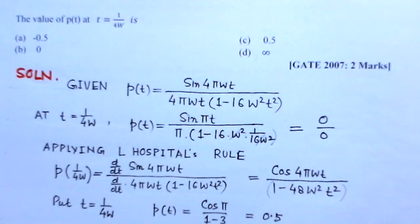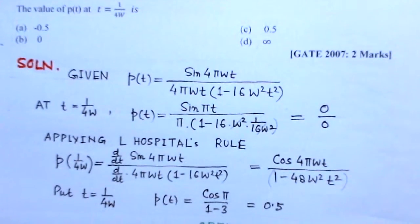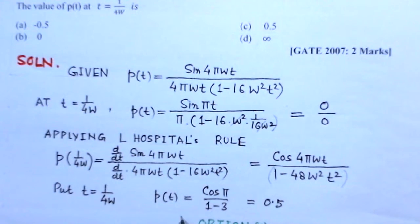If we substitute the value of t equals 1 over 4W, we get the expression here, P(t) equals cos π over 1 minus 3. Cos π, this is minus 2, cos π is minus 1, so you get 0.5.